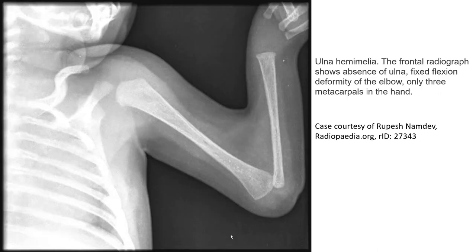This is the case of ulnar hemimelia. The frontal radiograph shows absence of the ulna, fixed flexion deformity of the elbow, and only 3 metacarpals in the hand.